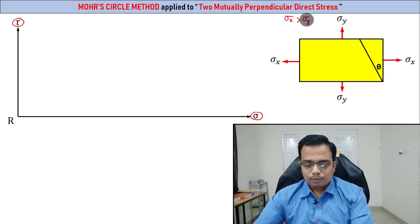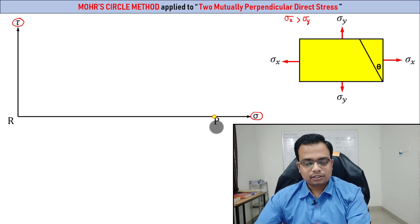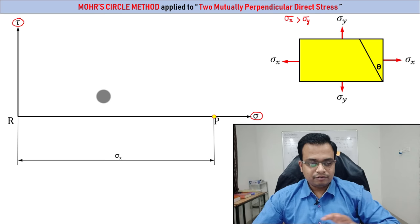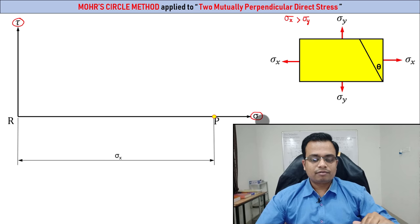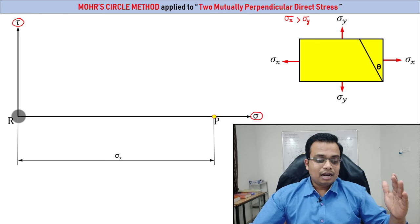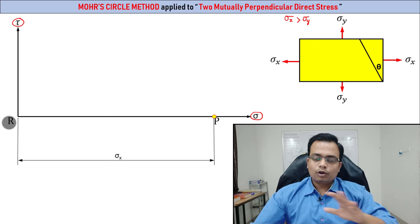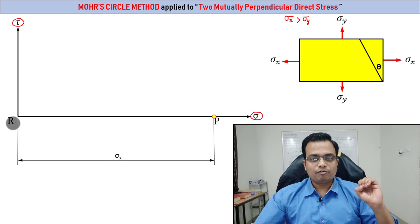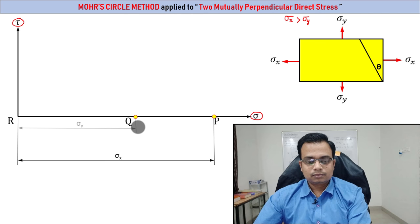With the help of a simple scale, mark sigma_x — that's point P. Since both stresses are positive (tensile), they will be marked in the positive direction of sigma. If one is compressive, you work on the left-hand side of R. R is the origin. For sigma_x mark P, and for sigma_y mark Q.